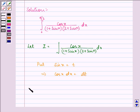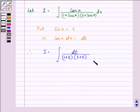So we have I equal to dt upon 1 plus t into 2 plus t. Now we can solve it by using partial fraction and on doing so we can write